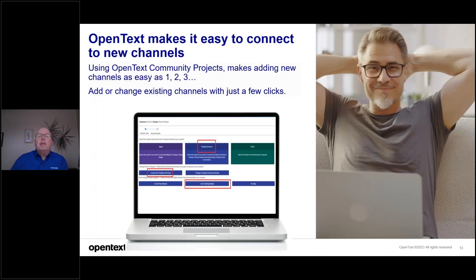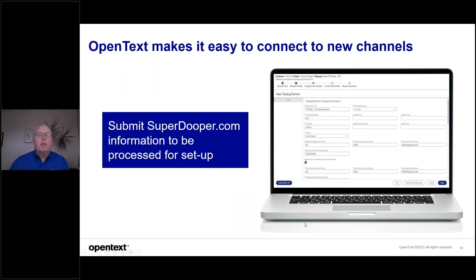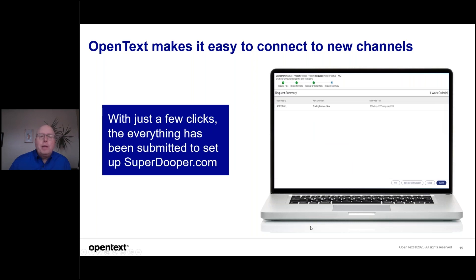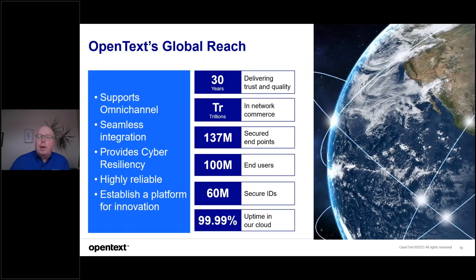As a leading provider of channel solutions, we know this needs to be an easy and quick process. We make it as easy as 1, 2, 3 — with just a few clicks, you can add or change channels. This process has been developed and refined over the past 30 years. Every month, on behalf of our customers, we implement thousands of new trading partners such as new channels, suppliers, transportation providers, banks, etc. The company submits superduper.com information, OpenText likely already knows their requirements, the company confirms, and OpenText gets the new channel implemented quickly so the company can start selling.